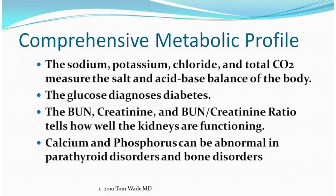When the doctor looks at your report of the Comprehensive Metabolic Profile, he organizes it in his mind according to body systems or possible diseases. The sodium, potassium, chloride, and total carbon dioxide measure the salt and acid-base balance of the body. The glucose level is how we diagnose diabetes. The BUN, creatinine, and BUN-to-creatinine ratio tells us how the kidneys are functioning and also can give us an idea about water balance and possible heart function. The calcium and phosphorus give us information on a possible endocrine disorder called hyperparathyroidism and also can give information on possible bone disease and malabsorption.